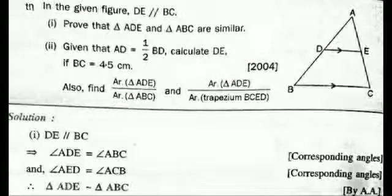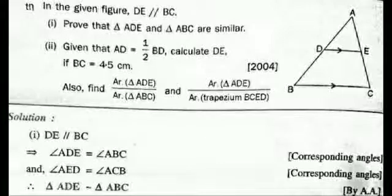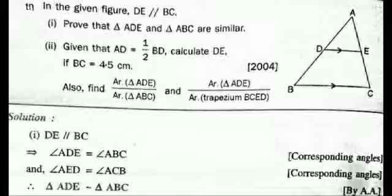Here is a problem: DE is parallel to BC. Prove that triangle ADE is similar to triangle ABC. Given that AD is half of BD and BC is 4.5 cm, calculate DE. Also find the ratio of area of ADE to area of ABC, and area of ADE to area of trapezium BCDE. Since DE is parallel to BC, corresponding angles are equal, so by AA, triangle ADE is similar to triangle ABC.